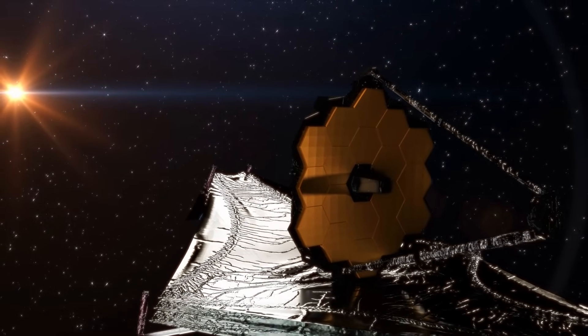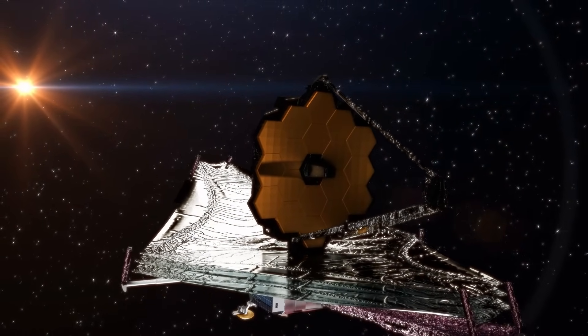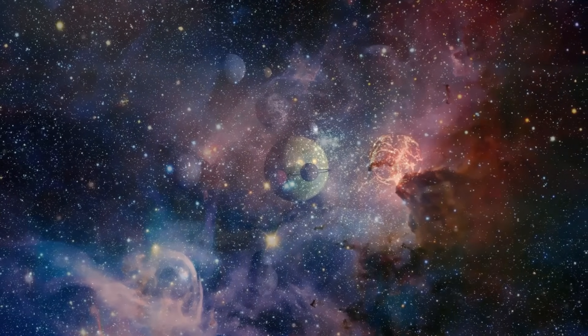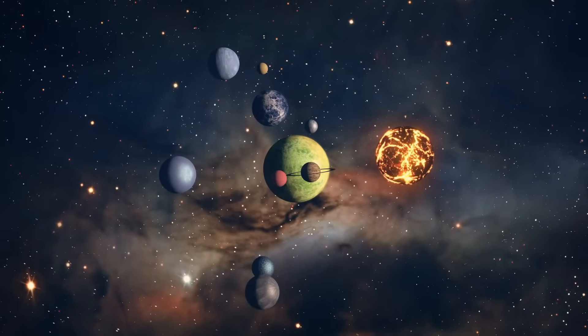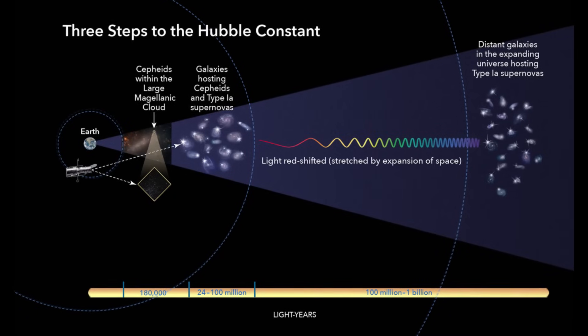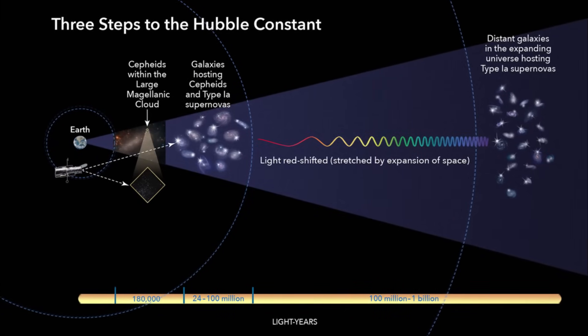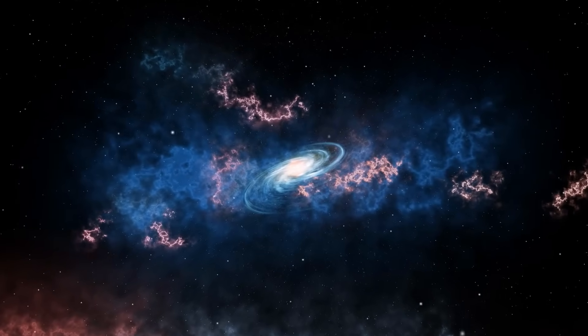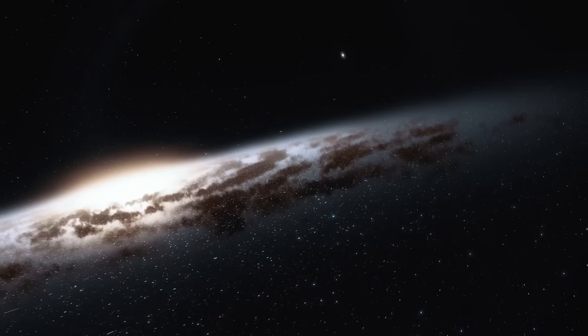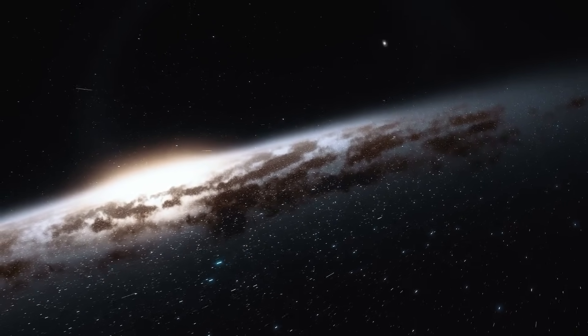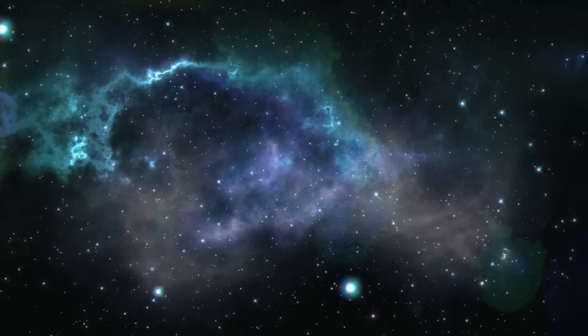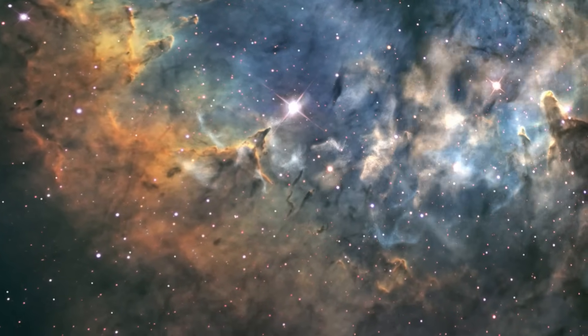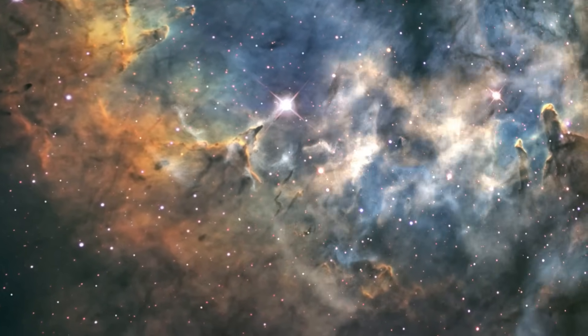We can see farther into the darkness of space than ever before thanks to the James Webb Space Telescope. The telescope can show us elements, planets, and galaxies that we would not have thought were possible to see. Scientists naturally thought that information from Webb would help them figure out the Hubble constant more accurately. The first wave of data, on the other hand, has made things a lot more difficult. They've taught us new things that don't fit with what we thought we knew. We might need to think again about what we know about how the universe works.